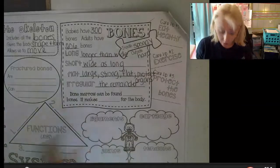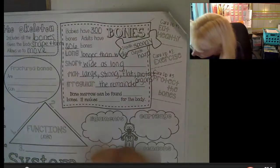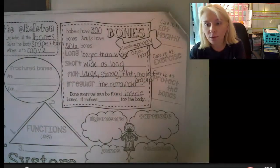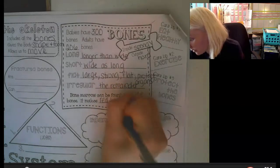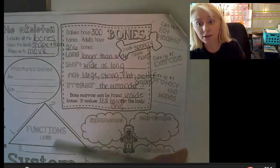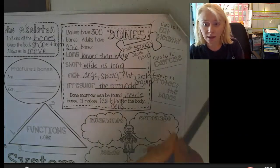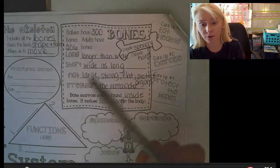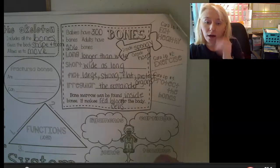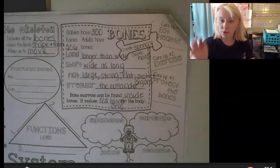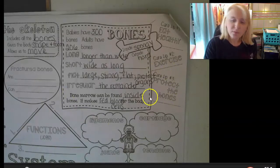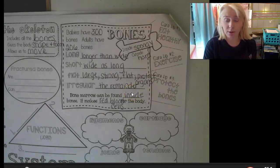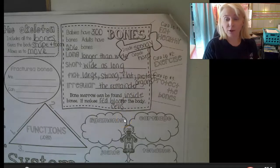Bone marrow can be found inside bones. It makes red blood cells — my sheet just says 'blood cells,' but I want to distinguish that we have different types. It's the immune system that makes white blood cells. The bone marrow deep inside our bones makes red blood cells, which is very important. You might have heard of bone marrow transplants that people get when they have leukemia and need someone else's bone marrow to produce healthy blood cells.